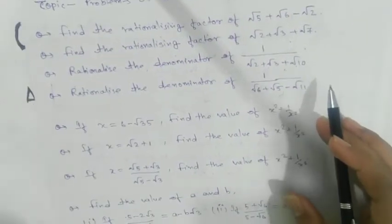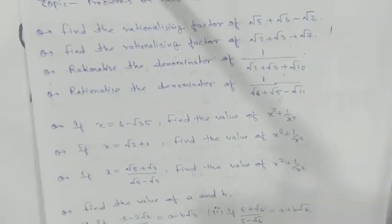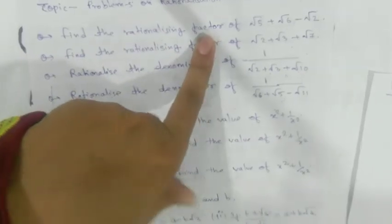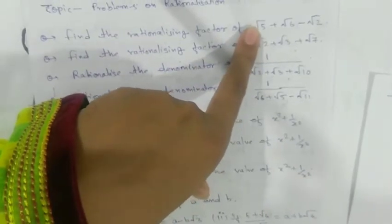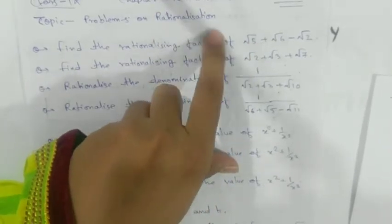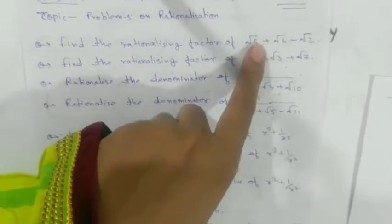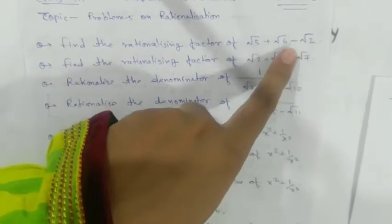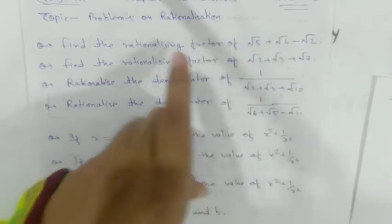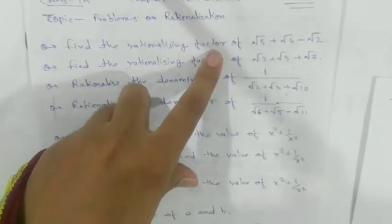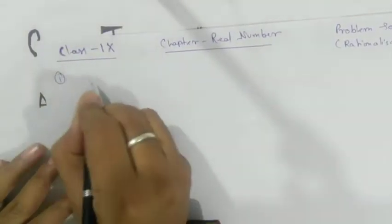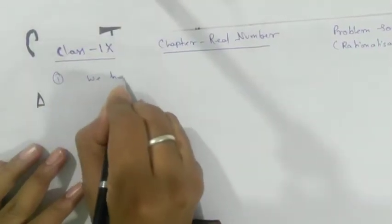So we will proceed and not waste our time. The first one: find the rationalizing factor — that means what number you will multiply with this expression so that you get a rational form. This is your irrational number, and the number you multiply to get a rational result is your rationalizing factor.